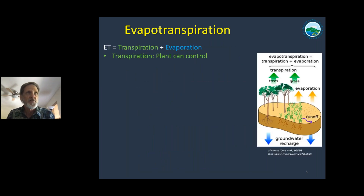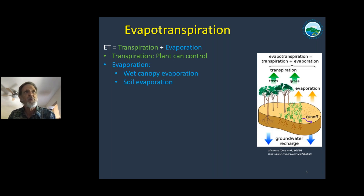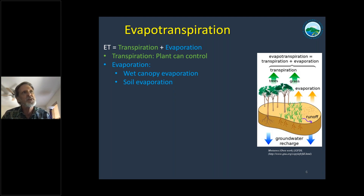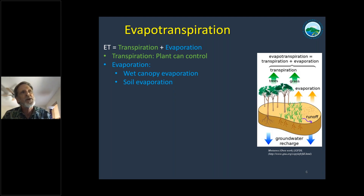Let me get started right away on evapotranspiration. Just to make sure everybody's on the same page: ET or evapotranspiration is the sum of transpiration and evaporation. Transpiration is the part that plants can exert the most control over. Evaporation is more affected by the structural characteristics of the vegetation, and we often separate it into wet canopy evaporation — which occurs during and after a rain event or fog event — and evaporation of water out of the moist soil, which is usually a small component in a closed canopy forest but can be large in sparse vegetation.